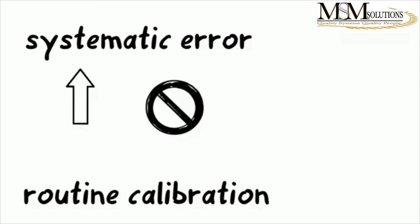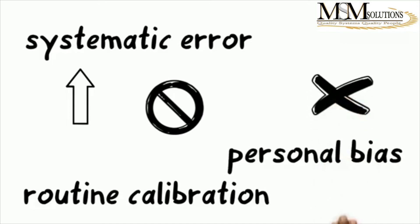You might also want to have a look at using improved techniques, because sometimes the method itself might have inherent systematic errors or inherent biases. Another thing you need to try and remove as far as possible is personal bias. These are just a few ways where you can try and minimize or even eliminate systematic error. But you need to be able to understand where these errors are coming from.